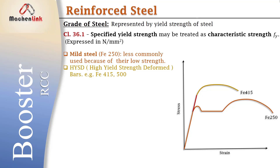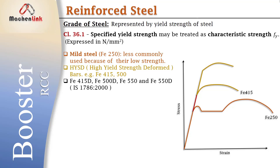Now, in addition to these three types of steel, some additional grades — Fe 415D, Fe 500D, Fe 550, and Fe 550D — have been recently introduced in IS 1786-2000. Here, D represents higher ductility.